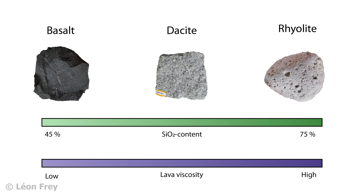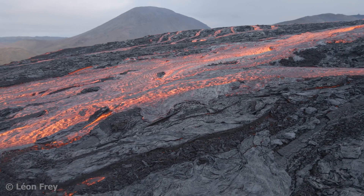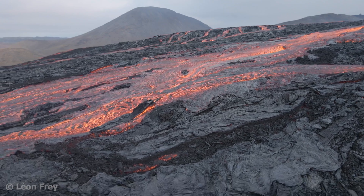The content of silica SiO2 in magmas varies between about 45% and 75%. The more silica a magma contains, the more viscous it is. Basaltic lavas have typically low silica contents in the range of 45–50%. They therefore have low viscosities, meaning that they are very fluid and form thin lava flows that can flow long distances.